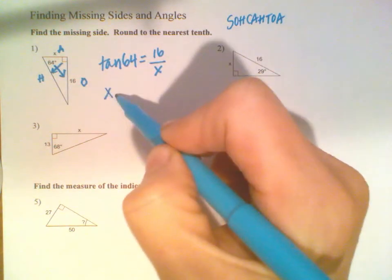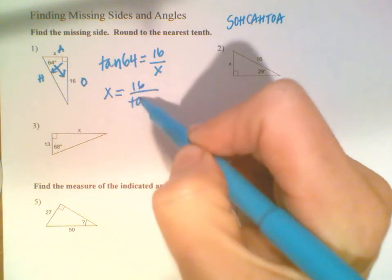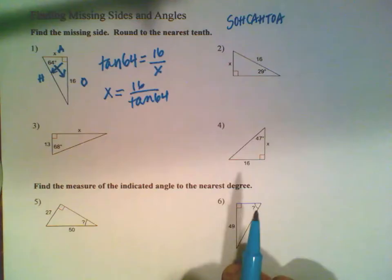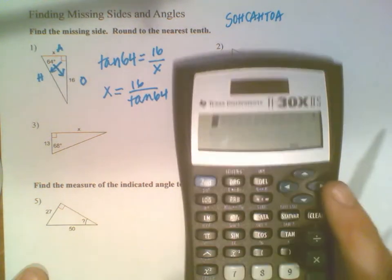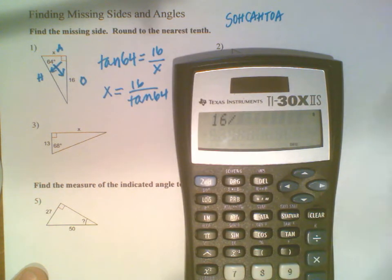So X equals 16 over the tangent of 64. I take my calculator and plug it in as I see it: 16 divided by the tangent of 64.